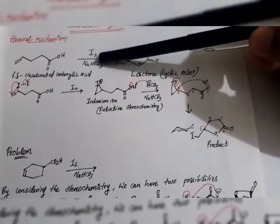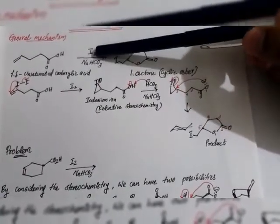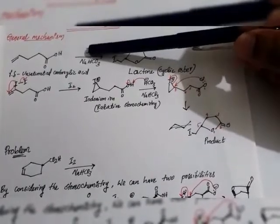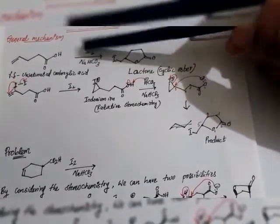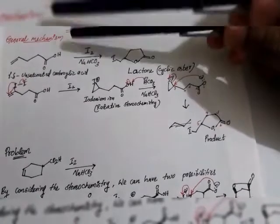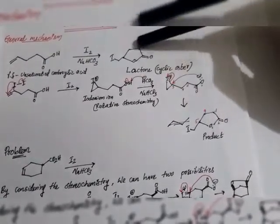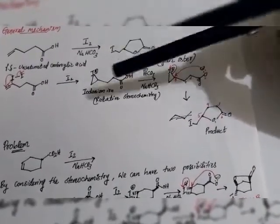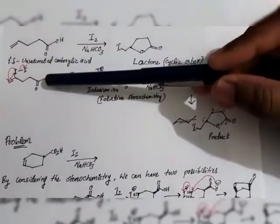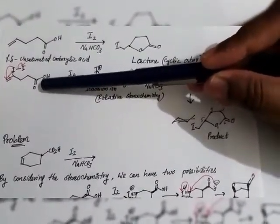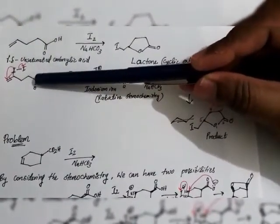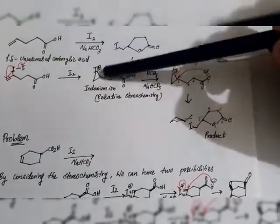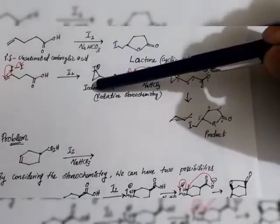The first step is halogenation — here we are using iodine. What will happen is iodine undergoes addition, followed by an intramolecular reaction, so you end up with a cyclic ester called a lactone. The first step of the mechanism is iodination, which produces an iodonium ion.